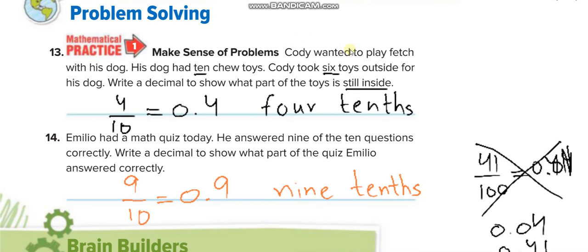Here now, Cody wanted to play fetch with his dog. His dog had ten chew toys total, ten. The denominator is ten. Cody took six toys outside for his dog. Write a decimal to show what part of the toys is still inside. How many he took outside? Six out of ten. Remaining? Four out of ten. So four over ten, 0.4. Its word form? Four tenths.